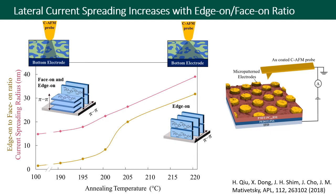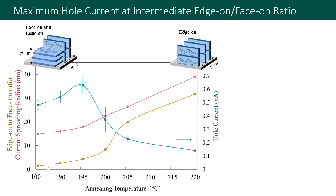Using this approach to quantify lateral current spreading, we see as expected that when the amount of edge-on stacking is increased, lateral current spreading also increases, because in-plane pi-pi stacking promotes lateral charge flow. Next we looked at the out-of-plane hole current, which shows a maximum near 195 degrees Celsius. This is interesting because the maximum current is not at the lower annealing temperatures where there's a greater amount of face-on stacking. This result shows that having a balance of in-plane and out-of-plane pathways is helpful for efficient charge flow.